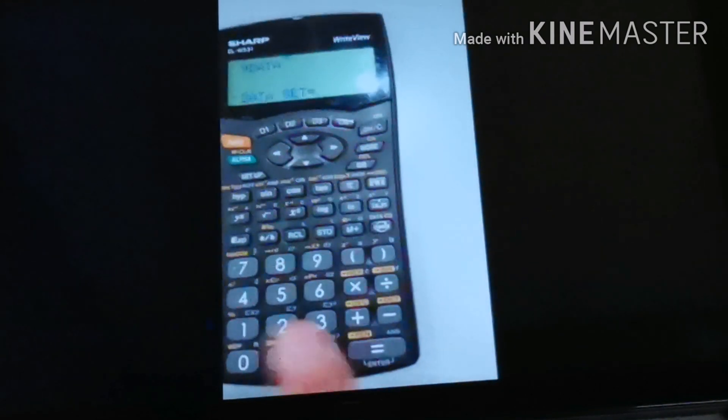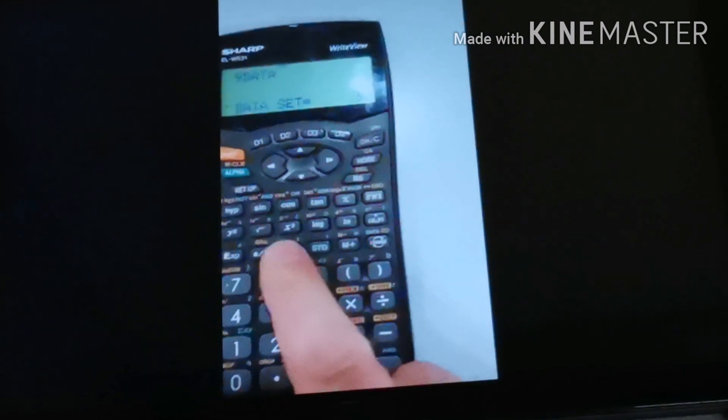The calculator now tells you there are three numbers entered. Now we want to know the mean. So the mean is green and it's on this 4 key, so press the green recall key then 4. The mean is 8. Standard deviation, recall and press 5. Standard deviation is 1.